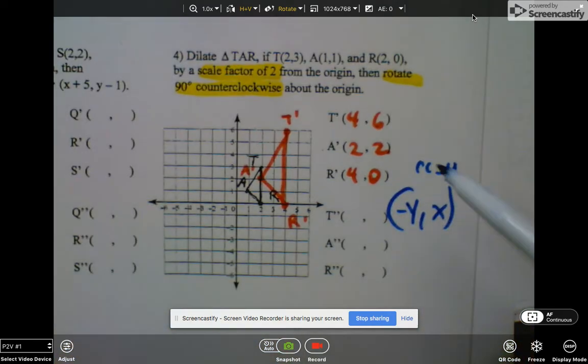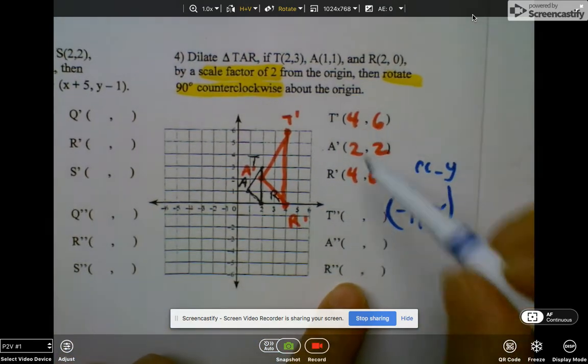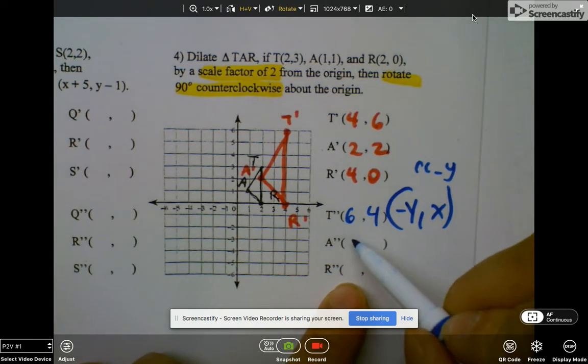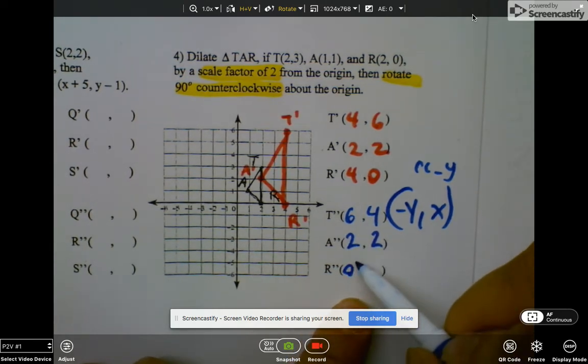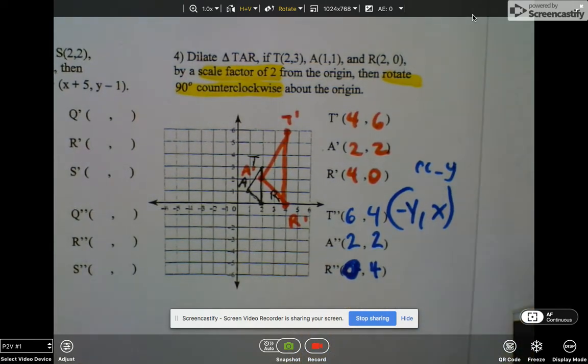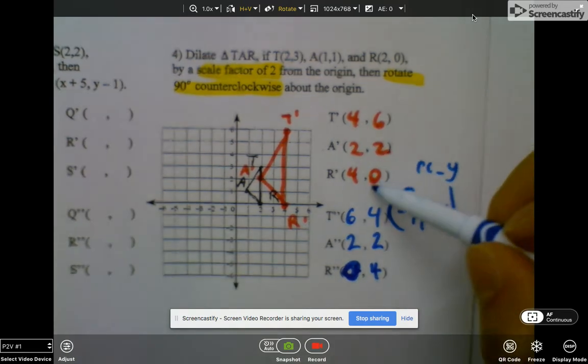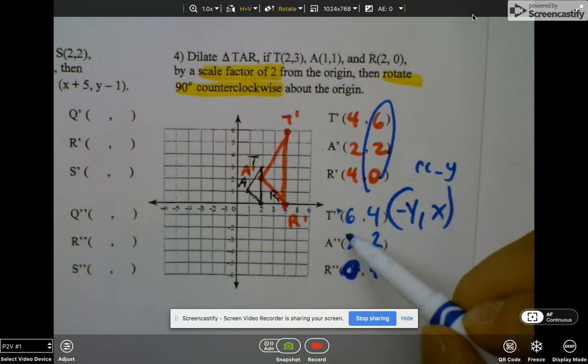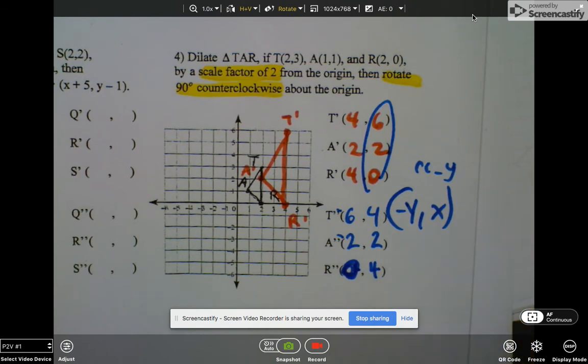So let's just switch them now. So it's going to be (6,4), (2,2), (0,4). And then I have to make all my y's, which are here, I'm going to make them opposite. So negative, negative, and then that's just zero. So now I graph it.